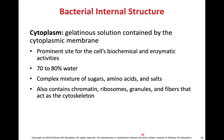The internal environment of the cell is referred to as the cytoplasm — everything within the plasma membrane. The cytoplasm is a gelatinous solution that is the prominent site for the cell's biochemical and enzymatic activities. It consists of 70–80% water, and is a complex mixture of sugars, amino acids, and salts. It also contains chromatin, ribosomes, granules, and fibers that act as a cytoskeleton. Unlike eukaryotes, you will not find any membrane-bound organelles within the cytoplasm of prokaryotes.